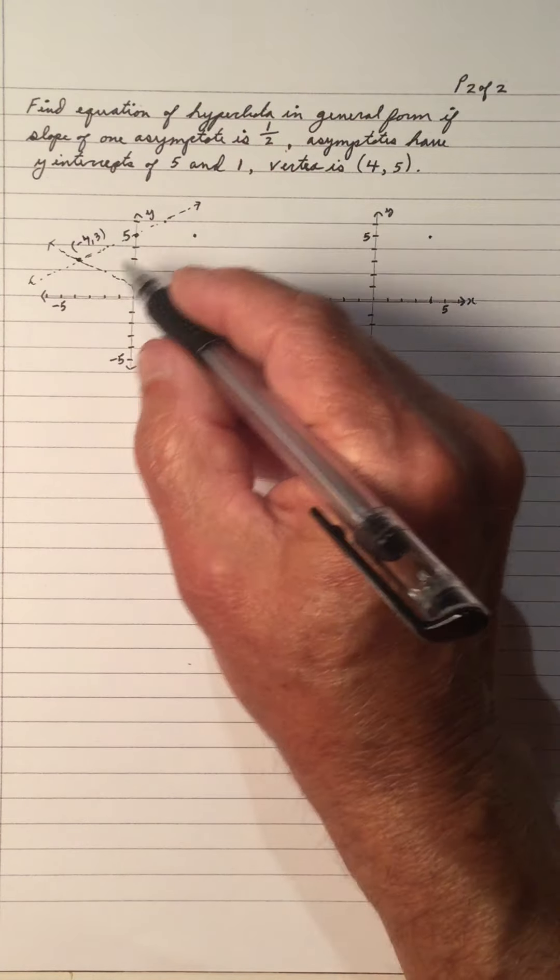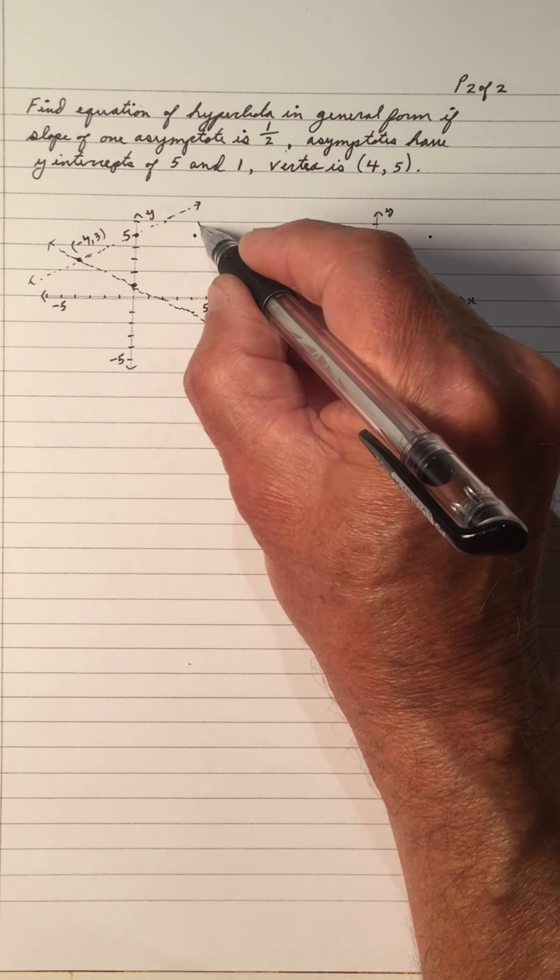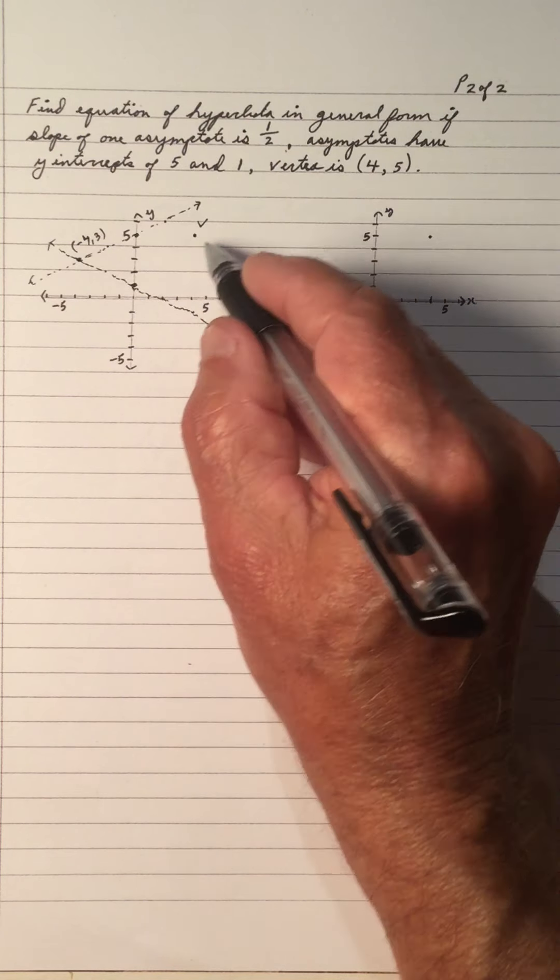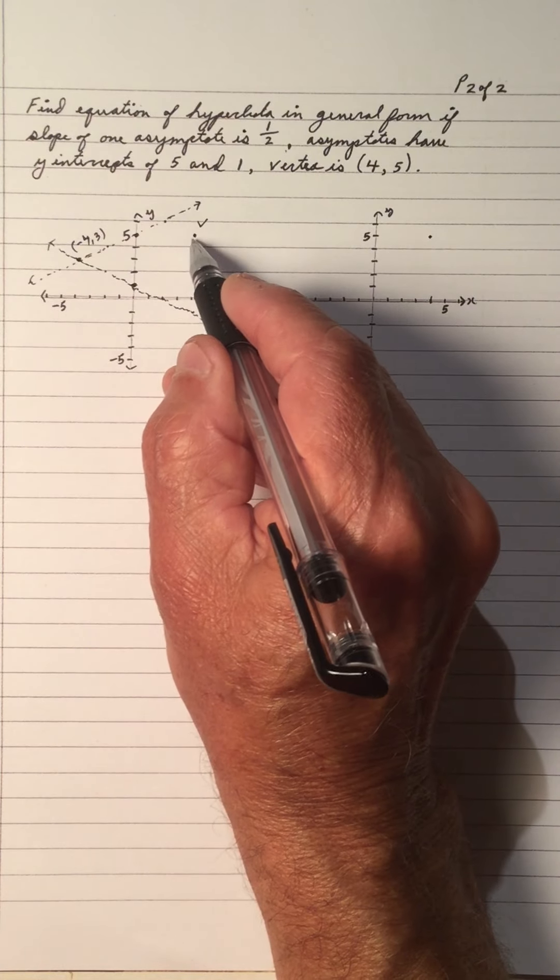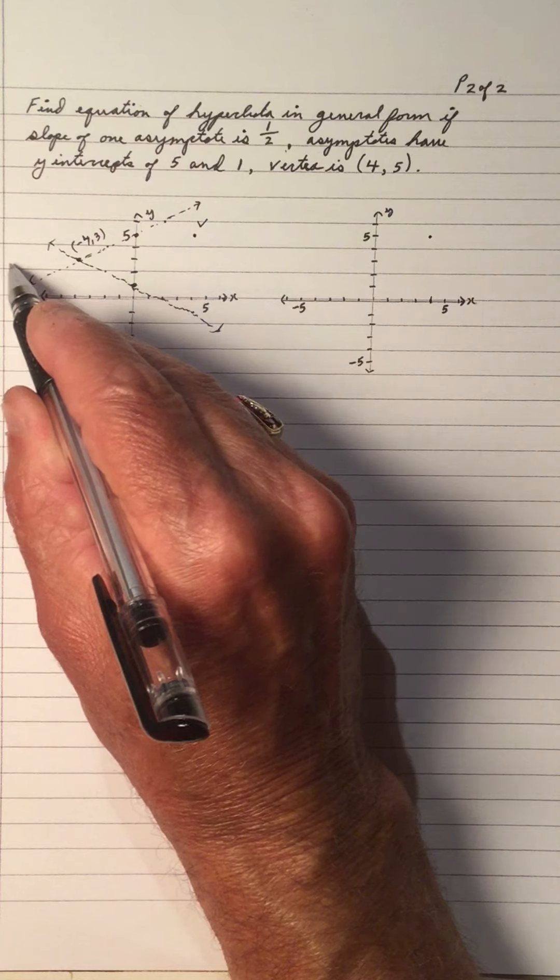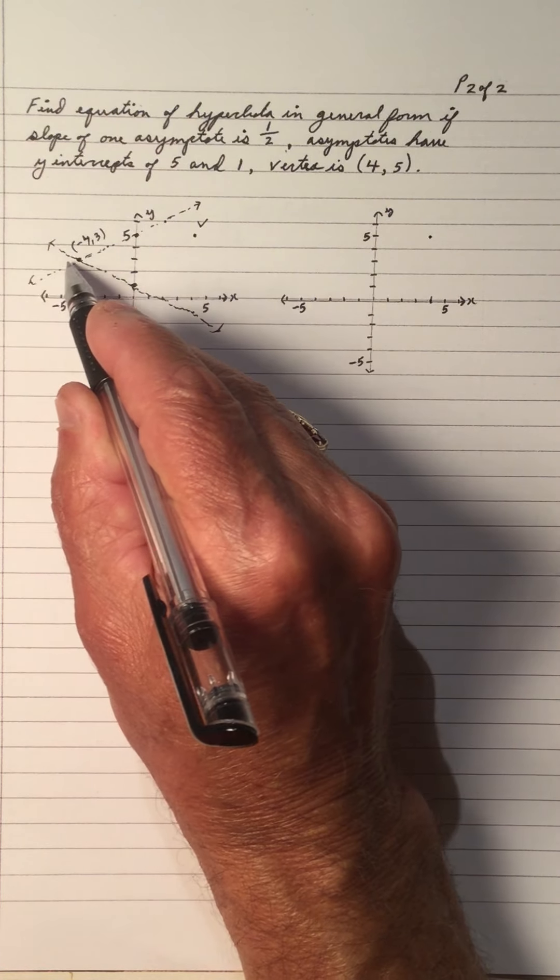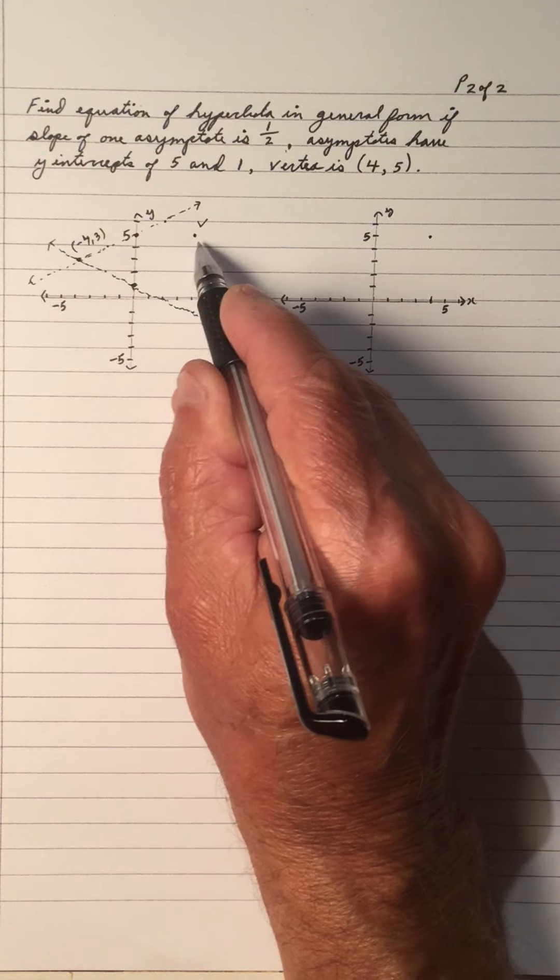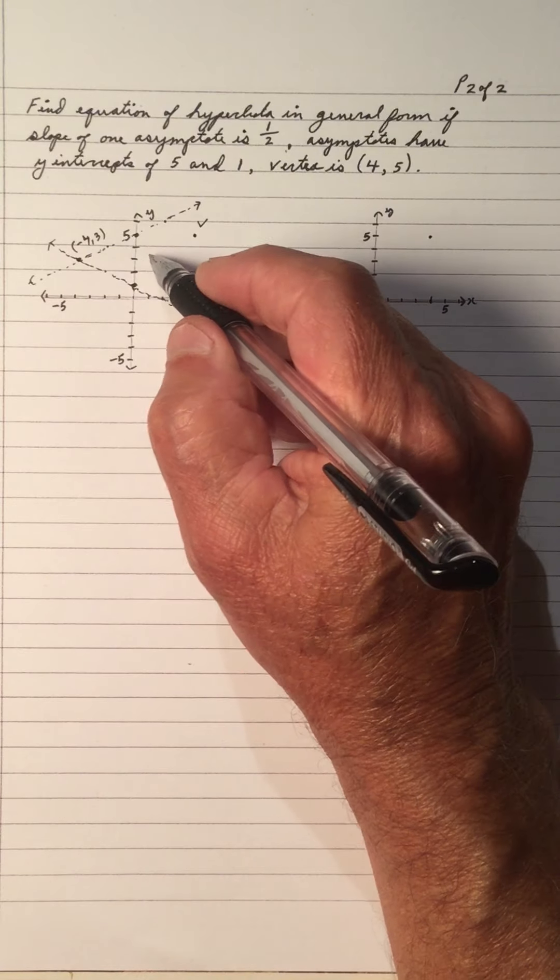But the vertex, one of the vertices, is right here. So this can't be, because if this is the center, the vertex has got to be on the horizontal axis, which is not, or it's got to be on the vertical axis, which is not. So this can't be.